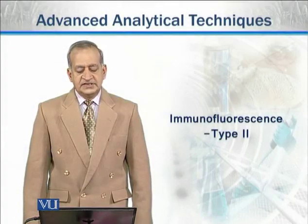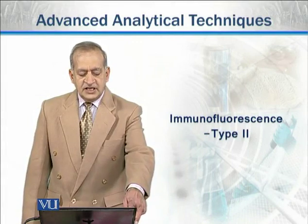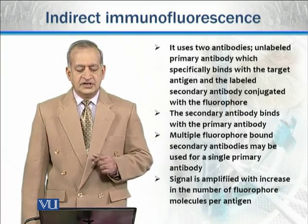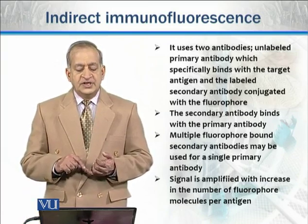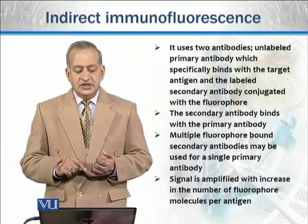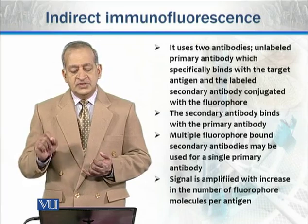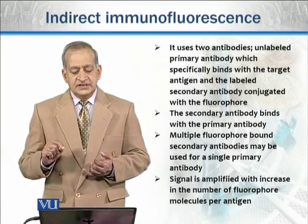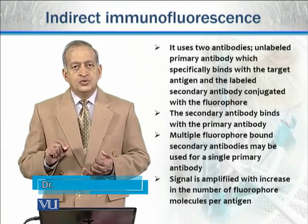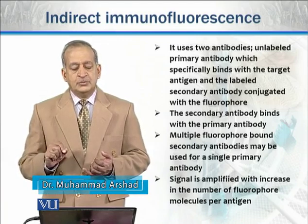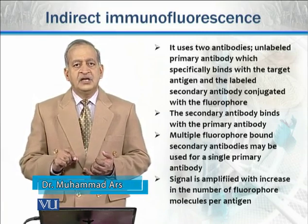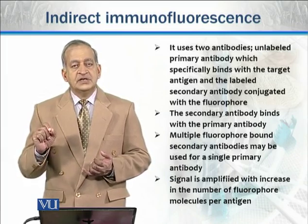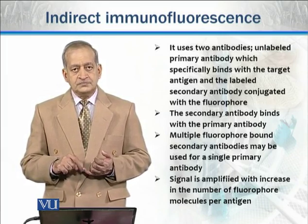Next we will discuss the second type of immunofluorescence: indirect immunofluorescence. It uses two antibodies. The first is an unlabeled primary antibody which specifically binds with the target antigens present in the cells or in the tissues. This is then followed by staining with a directly labeled secondary antibody. The primary antibody is unlabeled, and then we follow this with a labeled secondary antibody conjugated with a fluorophore.